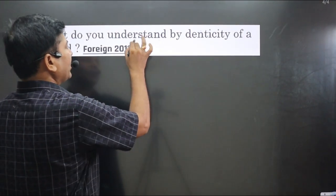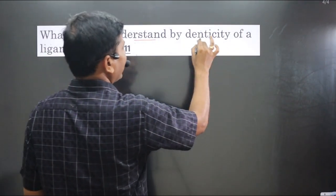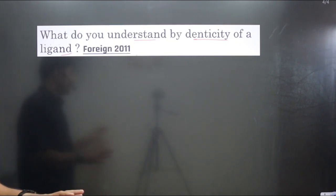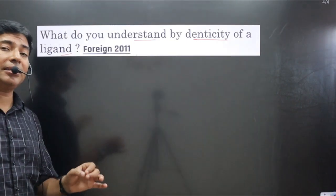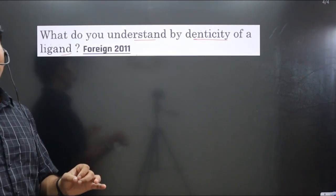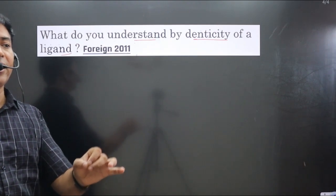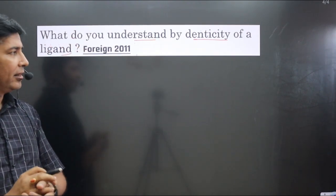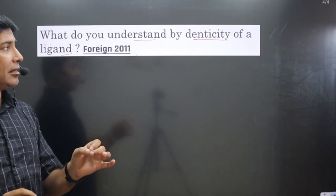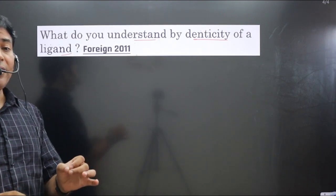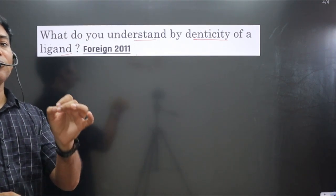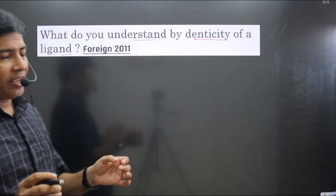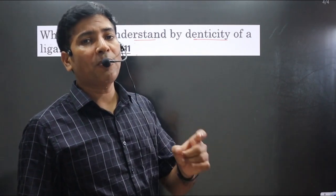The question asks: what do you understand by the denticity of a ligand? The denticity of a ligand is the capacity of a ligand to form a coordinate bond.